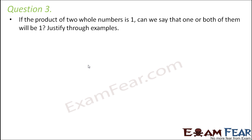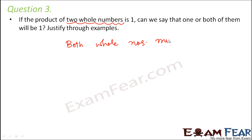Question number three: if the product of two whole numbers is one, can we say that one or both of them will be one? Justify through examples. Since we are talking about only whole numbers, both numbers being multiplied are whole numbers. In order to get a product of one, both whole numbers must be one — only then the product would be one.